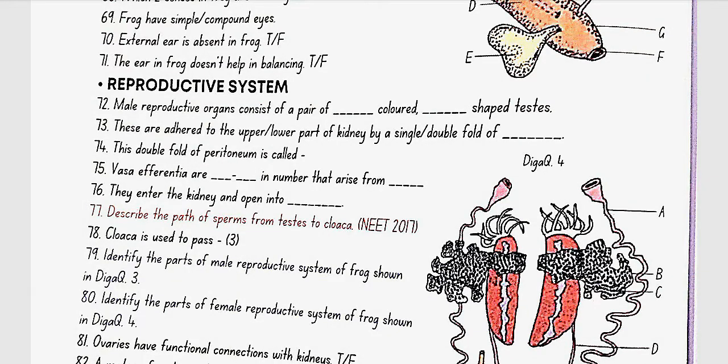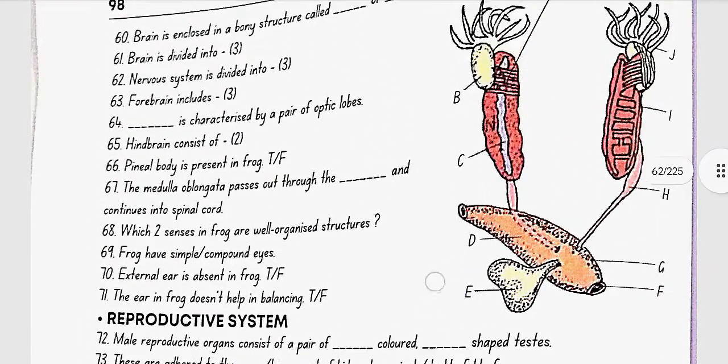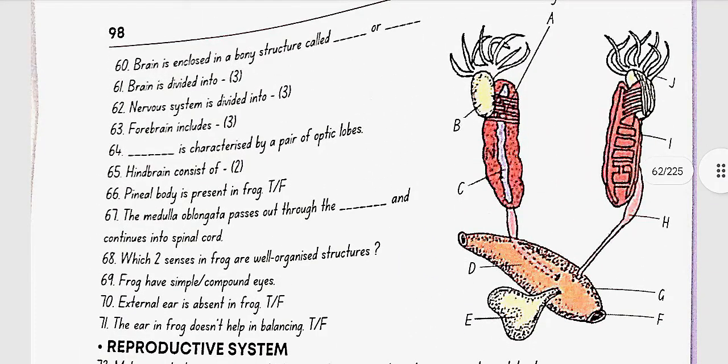Identify the parts of the male reproductive system of frog shown in diagram 3. So, here in diagram 3, A is the vasa efferentia, B is testes, C is adrenal gland, D is rectum, E is urinary bladder, F is cloacal aperture, G is cloaca, H is urinogenital duct, I is kidney, and J is fat bodies.